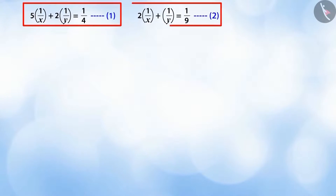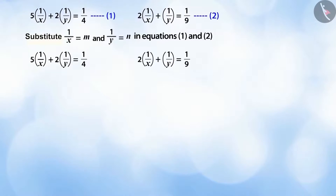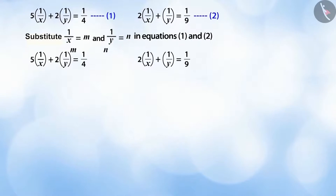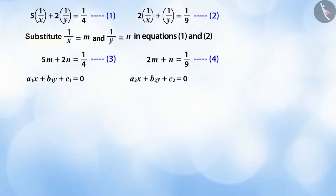In order to solve this type of pair of equations, we can express them in the form of linear equations in two variables. To do this, if we replace 1/x by m and 1/y by n in equations one and two, then we get equations three and four. In this manner, we have expressed equations one and two in the form of linear equations.